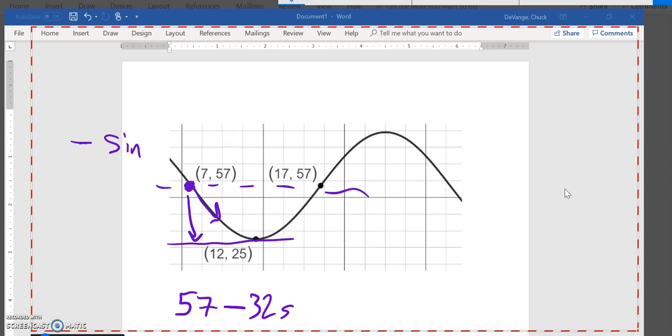So minus 32 sine of something. So I notice that my furthest left point is shifted to the right 7 off of 0, so I'm going to make this an x minus 7. And now all I have to do